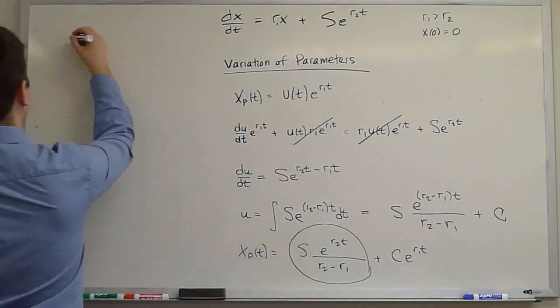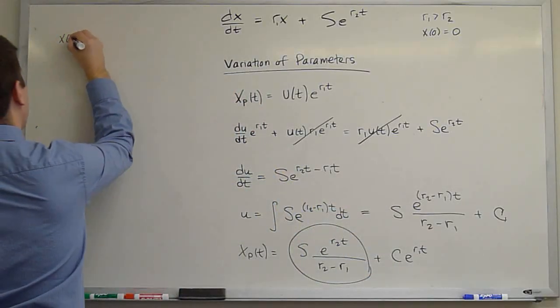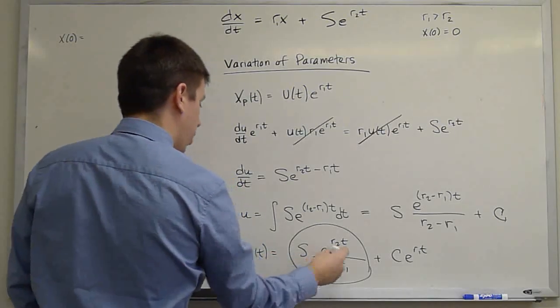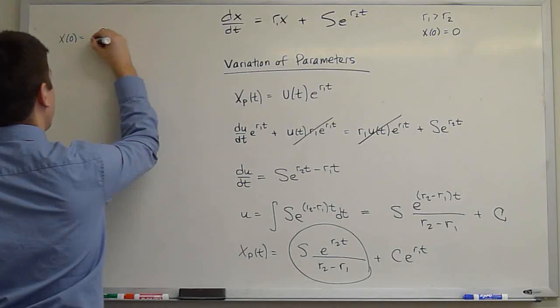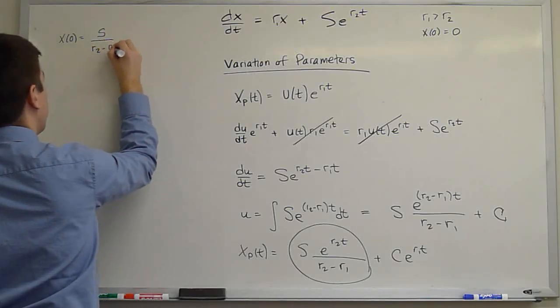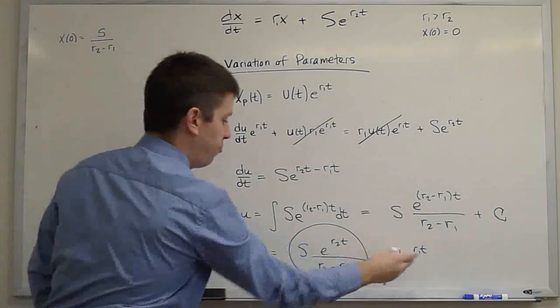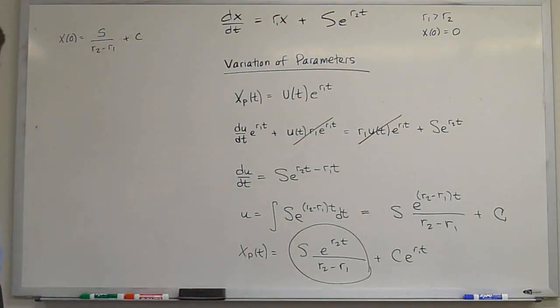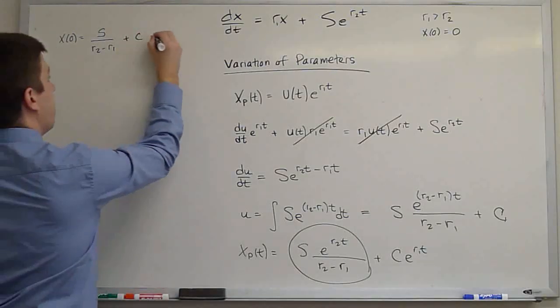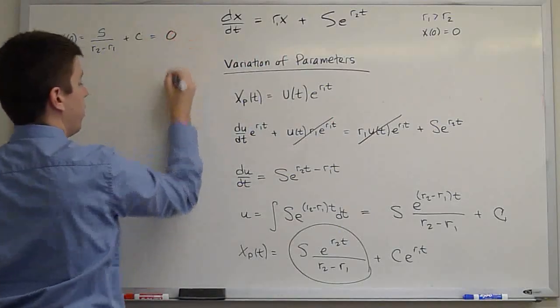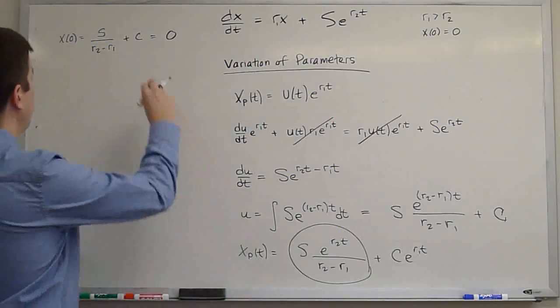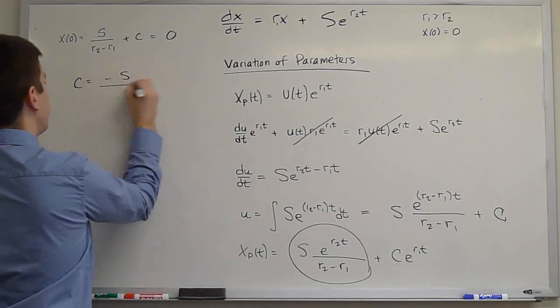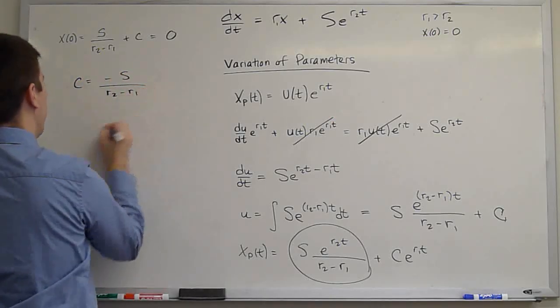So let's plug in t equals zero. When t equals zero, this is one and this is one. So we just get s/(r2-r1) + c. And that must equal zero to satisfy our initial condition. So that means c is negative s/(r2-r1).